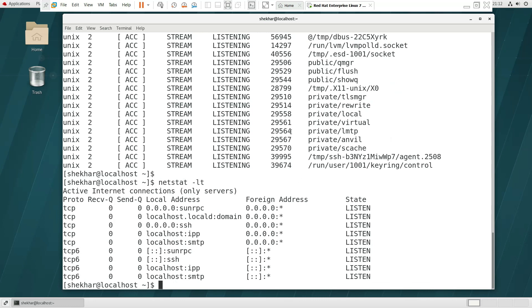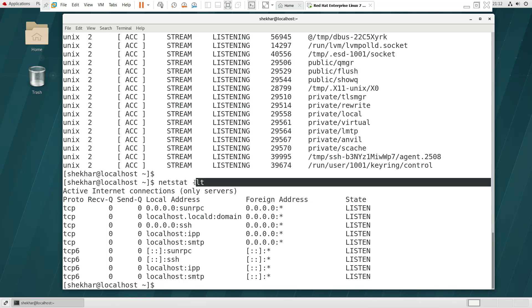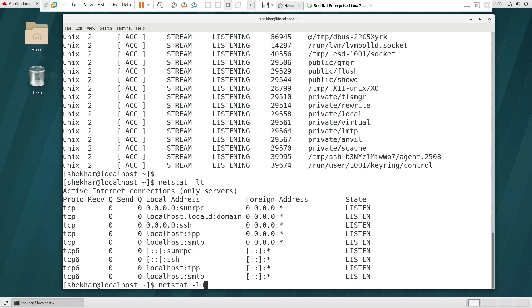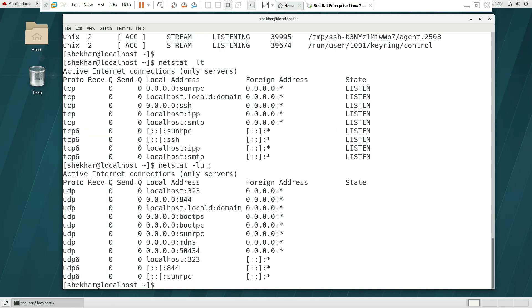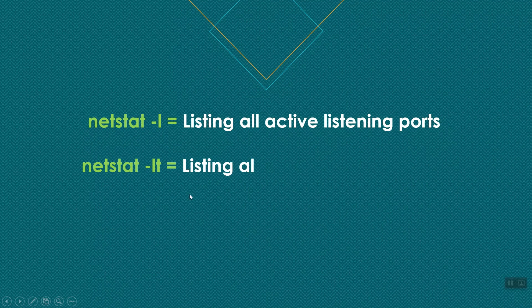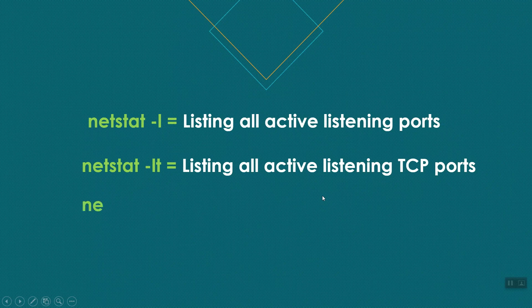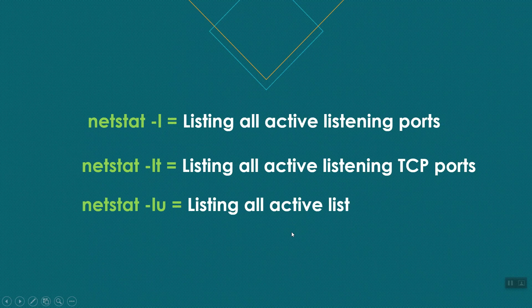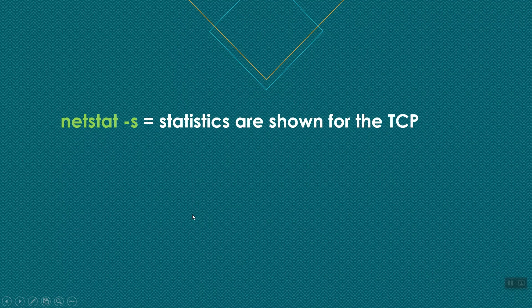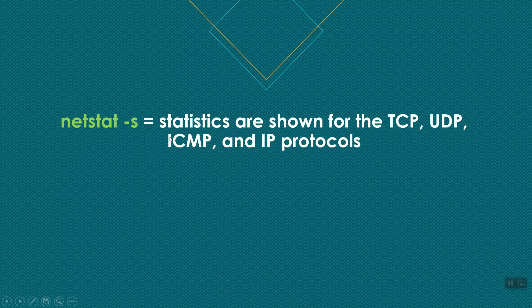The -lt option shows TCP ports that are listening. The -lu option shows UDP ports that are listening. We can also use netstat -s to see network statistics for TCP, UDP, ICMP, and IP protocols.